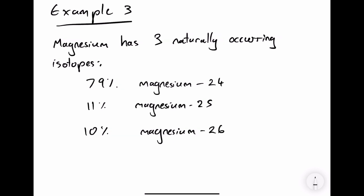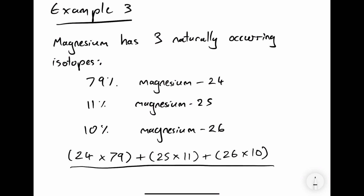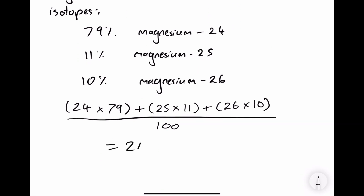Our last example has three isotopes. Magnesium has three naturally occurring isotopes: 79% magnesium-24, 11% magnesium-25, and 10% magnesium-26. We take 24 multiplied by 79%, add 25 multiplied by 11%, then add 26 multiplied by 10%, and divide the whole thing by 100. This gives us an answer of 24.31.